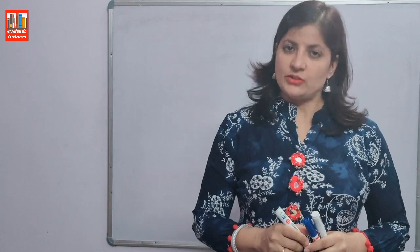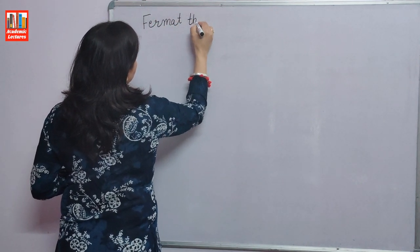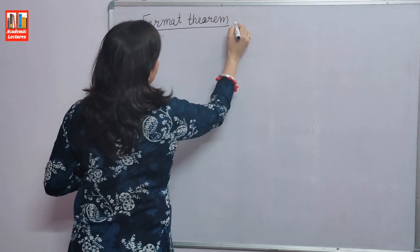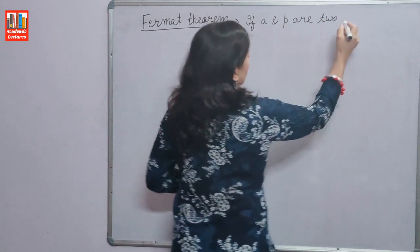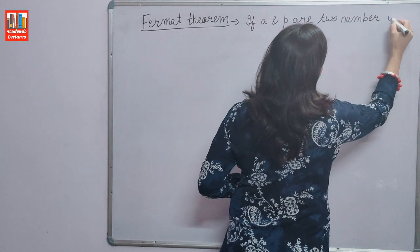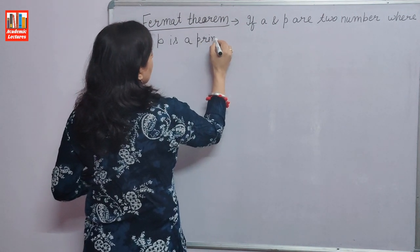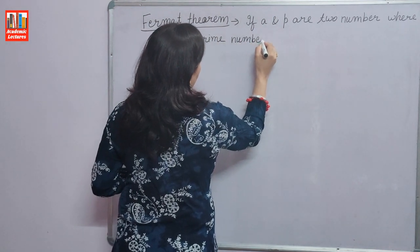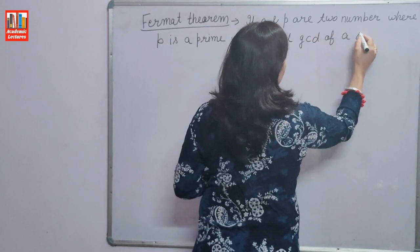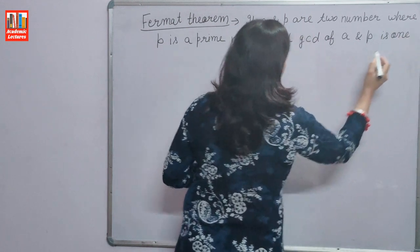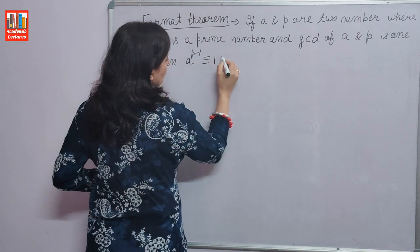First, we will see the definition of Fermat's theorem. If A and P are two numbers, where P is a prime number and GCD of A and P is 1, then A raised to the power P minus 1 is congruent to 1 modulo P.